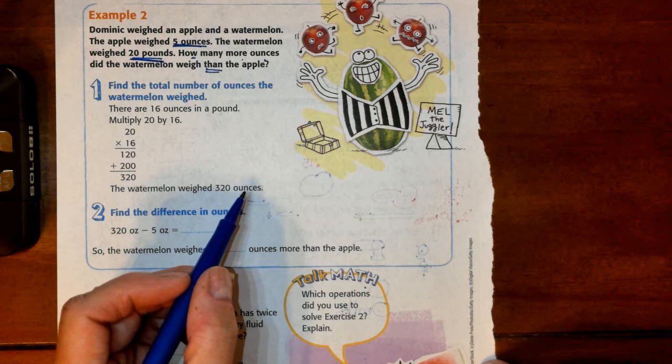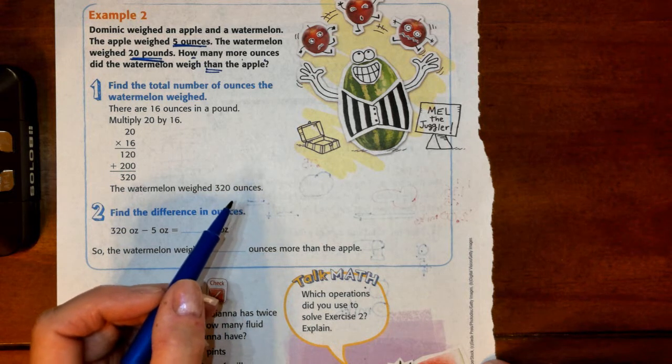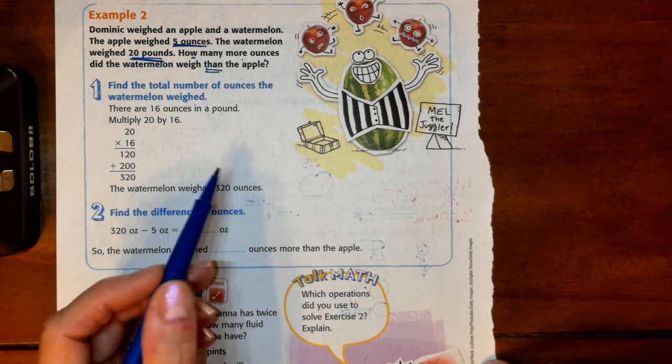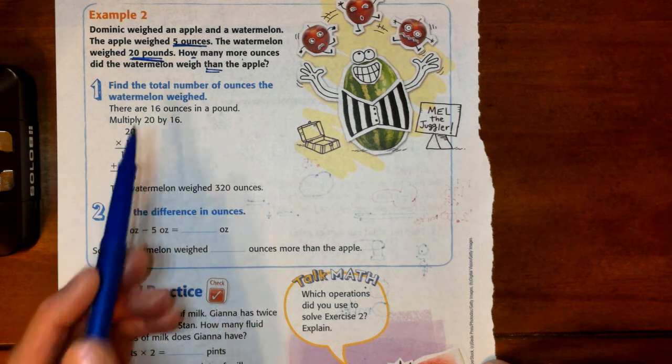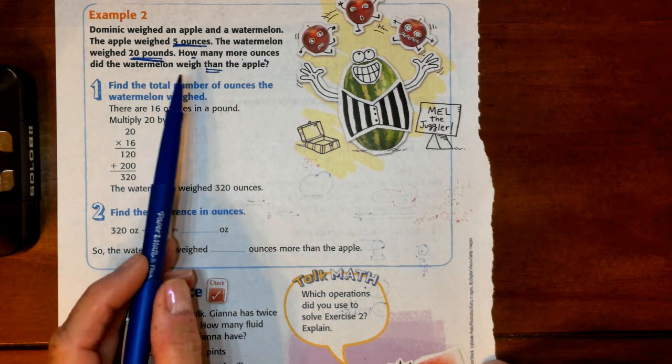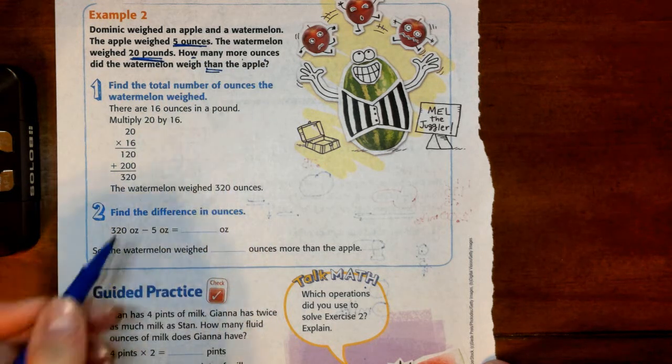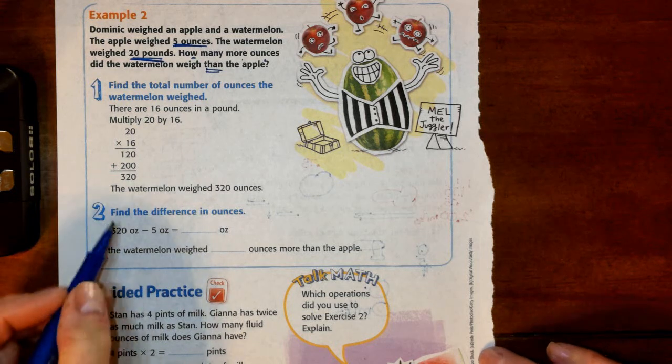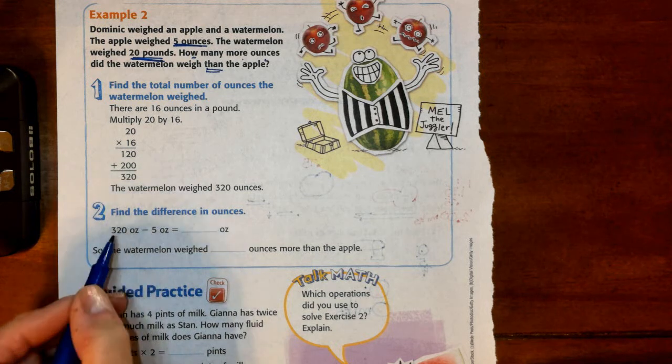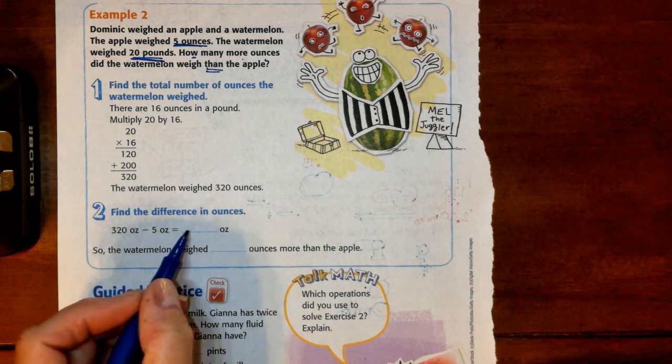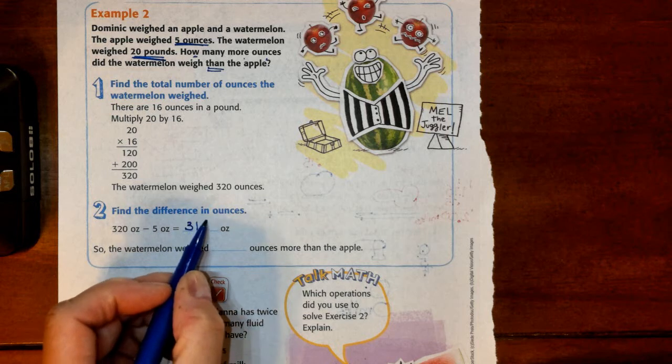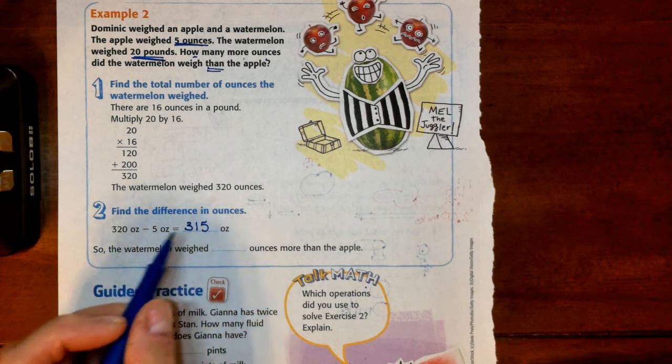But that's just the first part. Again, you guys, all of these story problems are going to be multi-step—maybe two, maybe three steps. In this case, we converted first. Now we have to answer the question, how many more ounces did the watermelon weigh than the apple? So the watermelon weighed 320 ounces, the apple was only 5. So 320 take off 5 gives us 315 ounces. So the watermelon weighed 315 ounces more than the apple.